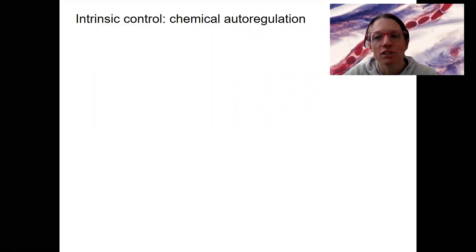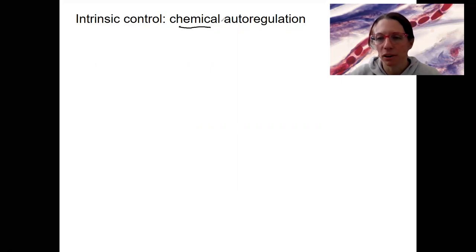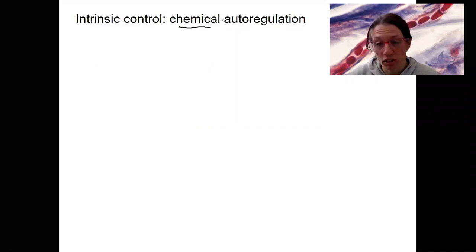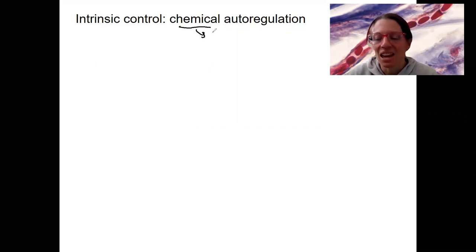The second kind of intrinsic control or autoregulation is chemical. There's actually going to be more to this than the myogenic control. Remember, autoregulation is local conditions within the tissue — local control based on local conditions. So myogenic was based on blood flow; chemical autoregulation is going to be based on what chemicals are present.